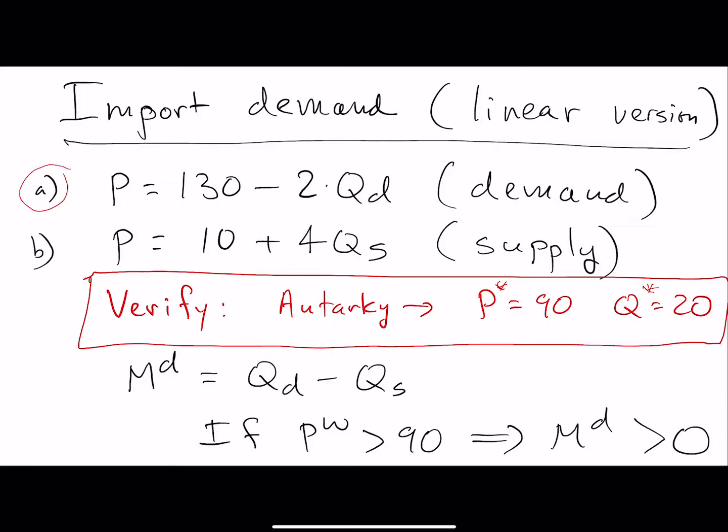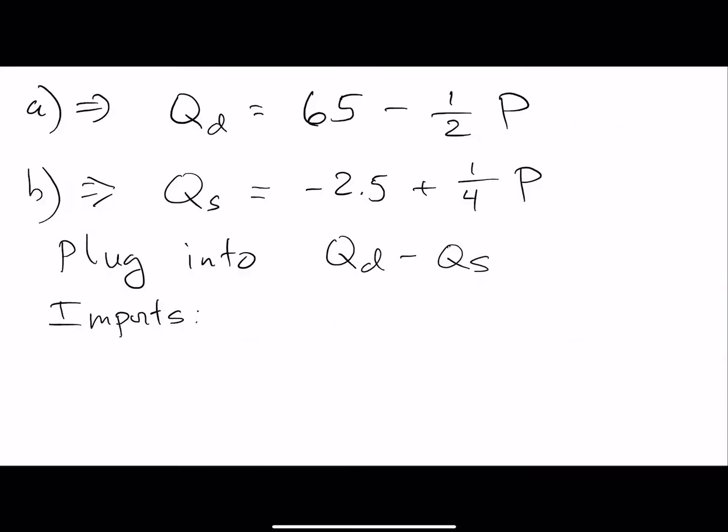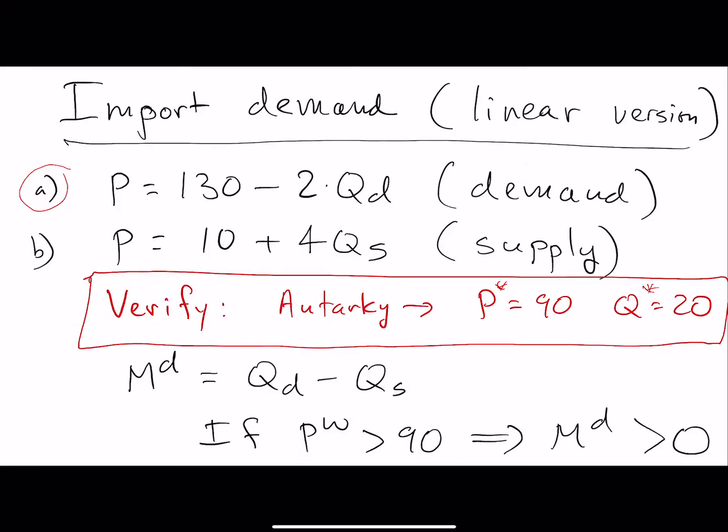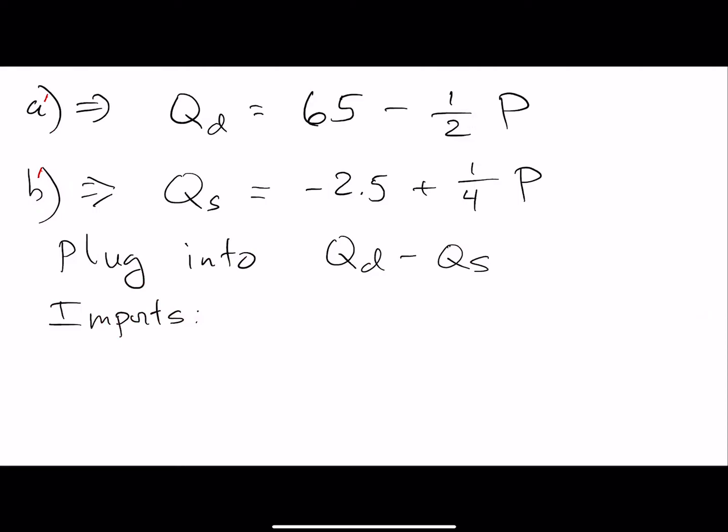We have equation a where price is a function of quantity demanded. This version called a prime is simply rewriting equation a, solving for Qd, so isolating Qd so that the quantity demanded is a function of price. We do the same thing for equation b.